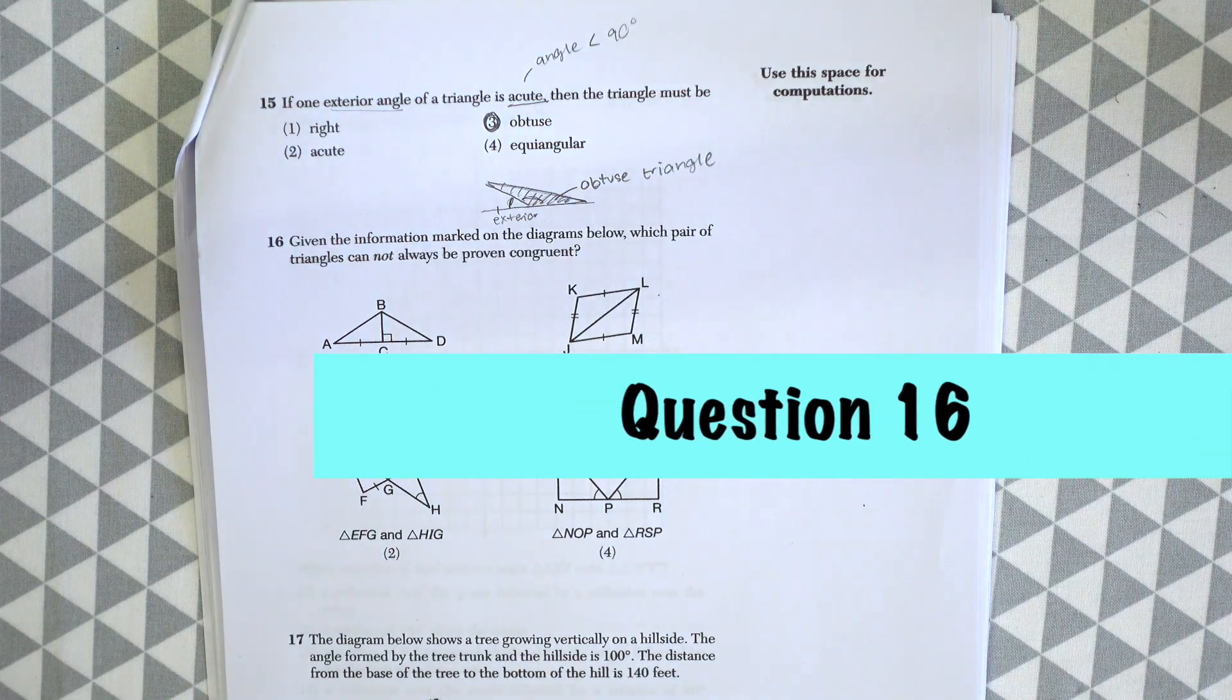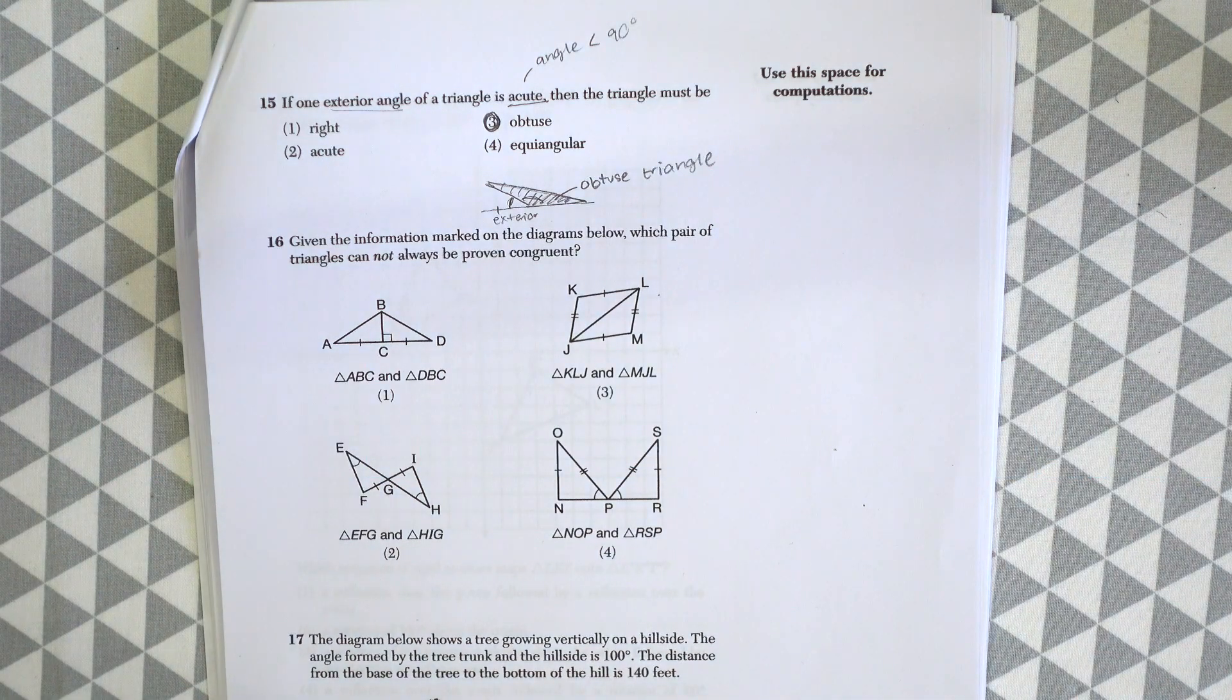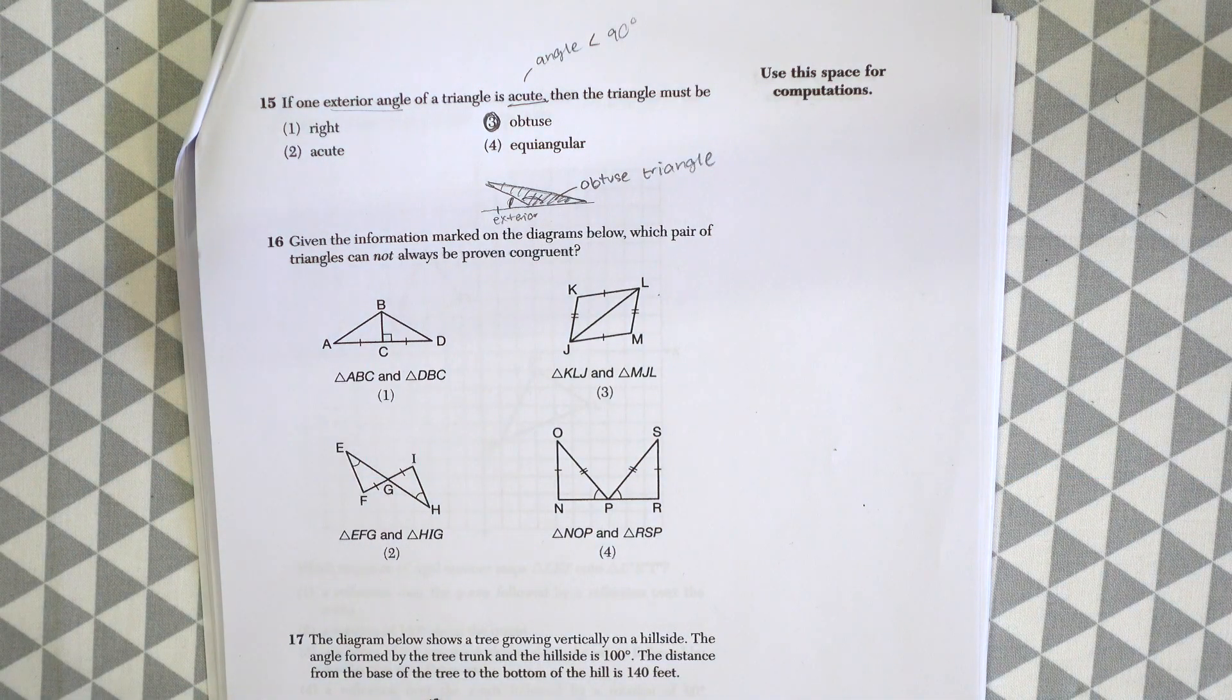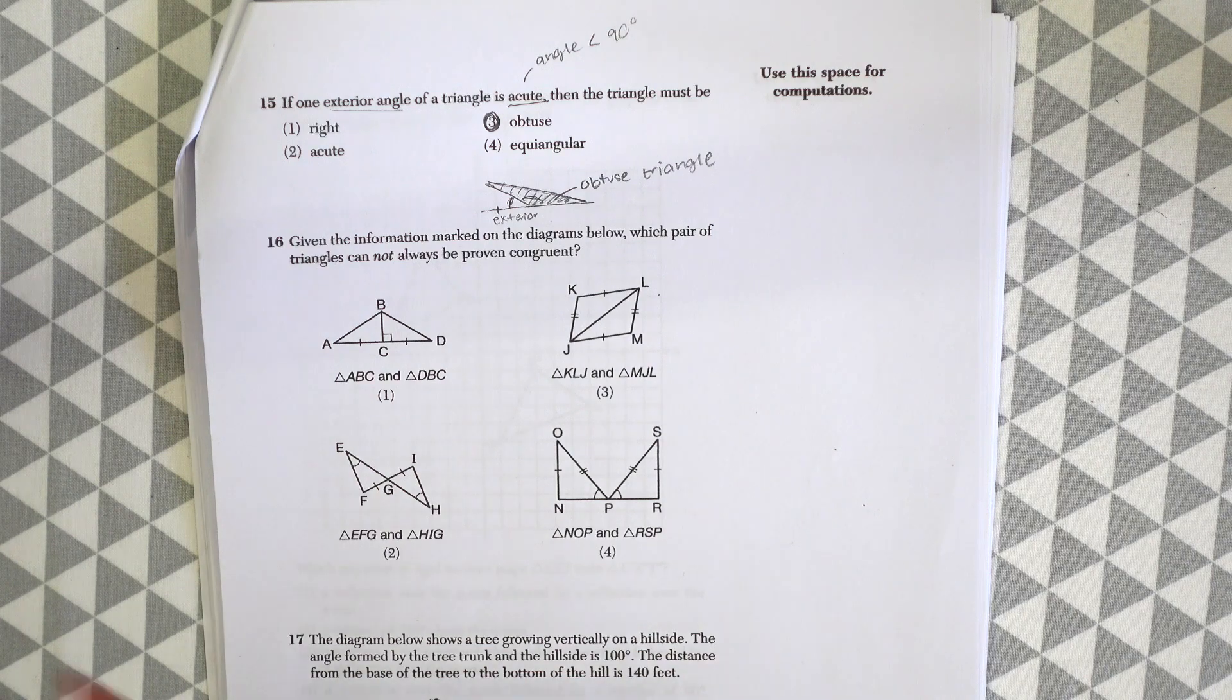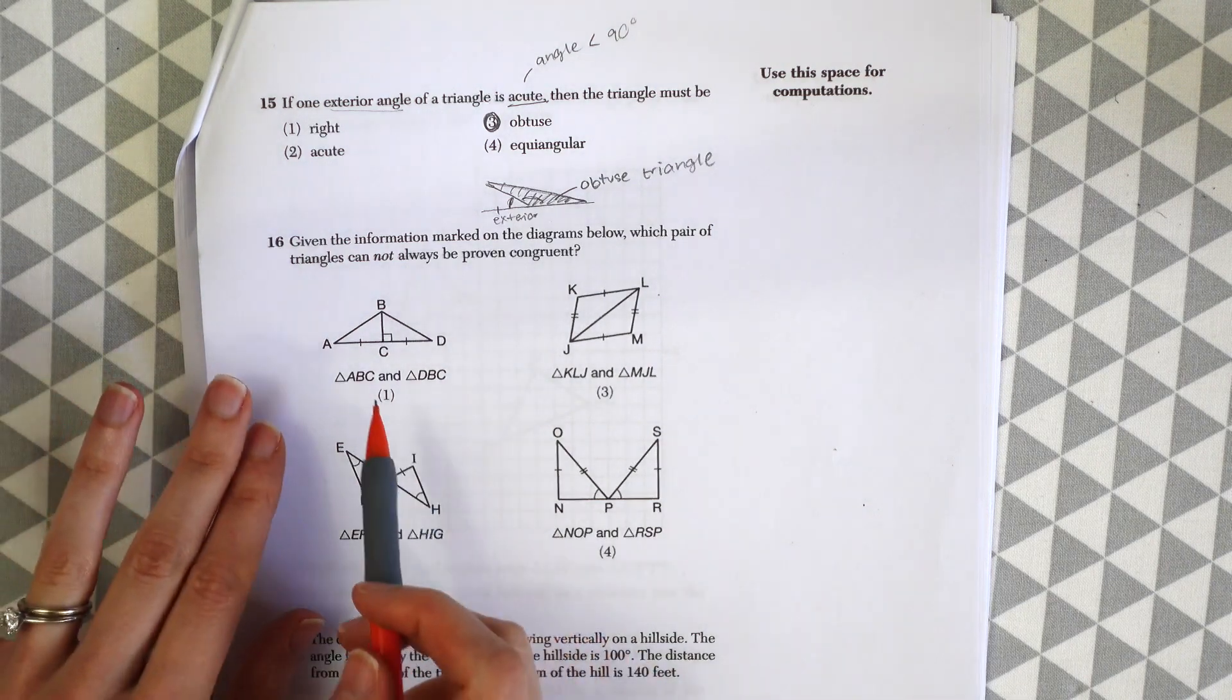Question number 16. Given the information marked on the diagrams below, which pair of triangles cannot always be proven congruent? So let's look at the different triangles they give us.